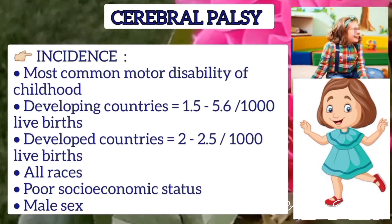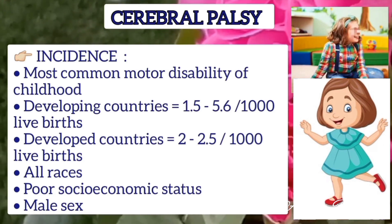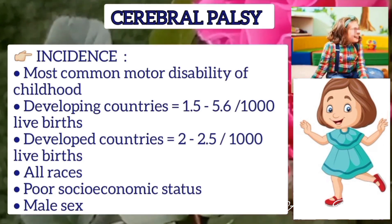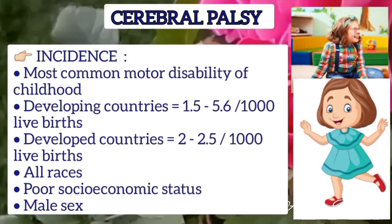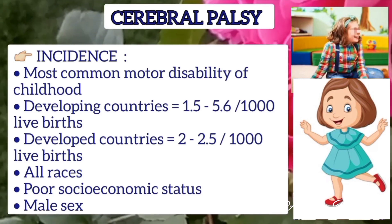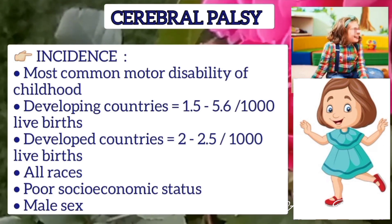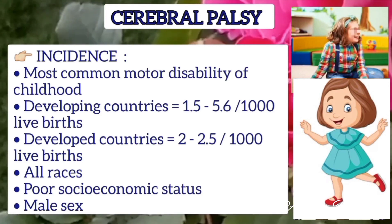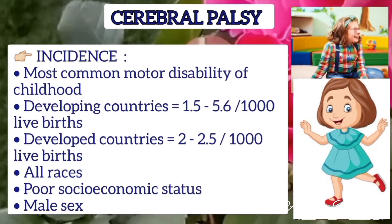Cerebral palsy is the most common motor disability of childhood. In developing countries, incidence is about 1.5 to 5.6 per thousand live births, and in developed countries it is 2 to 2.5 per thousand live births. It occurs in all races and is more common in poor socioeconomic status and male gender.